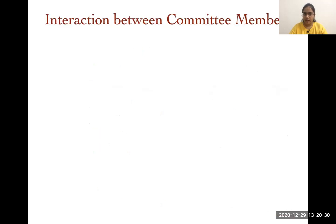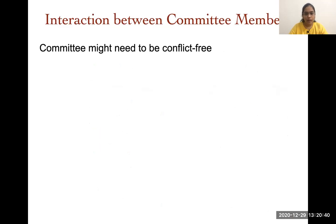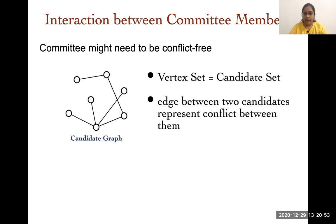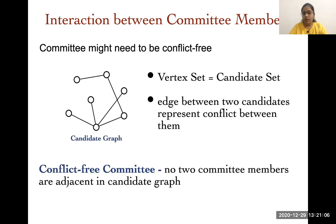This model has some limitations in the sense that it usually ignores the interaction between the committee members. So, what are the possible interactions between the committee members that might be of interest? We look for conflict-free committees — we want a committee such that there is no conflict between the committee members. We model it using a candidate graph, where the vertex set is the same as the candidate set and an edge between two candidates represents a conflict between them. A committee is conflict-free if no two committee members are adjacent in the candidate graph. This is a well-studied graph-theoretic problem, which is the independent set problem.